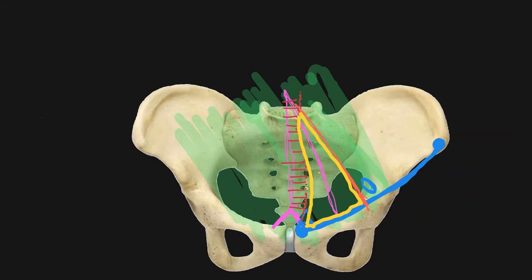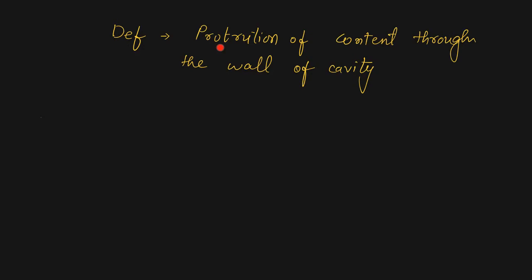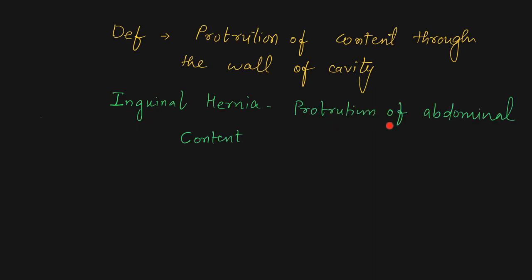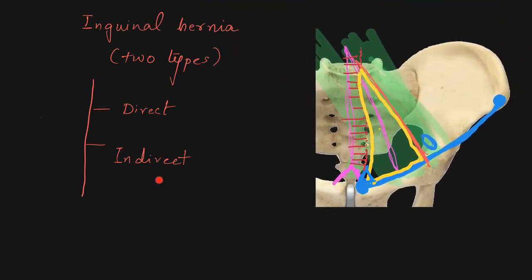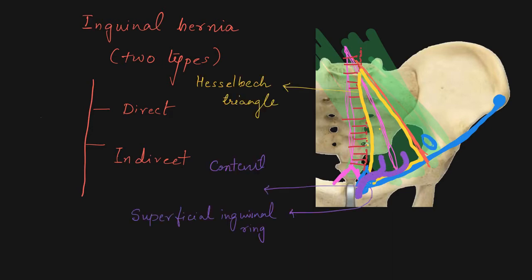Now we come to the hernia. In general, a hernia is a protrusion of the content of a cavity through its wall, and here it is an inguinal hernia — a protrusion of any abdominal content through the inguinal canal. These inguinal hernias are of two types: direct inguinal hernia and indirect inguinal hernia. In a direct inguinal hernia, abdominal content is forced over the Hesselbach's triangle and through it the content protrudes into the inguinal canal and passes through the superficial inguinal ring.